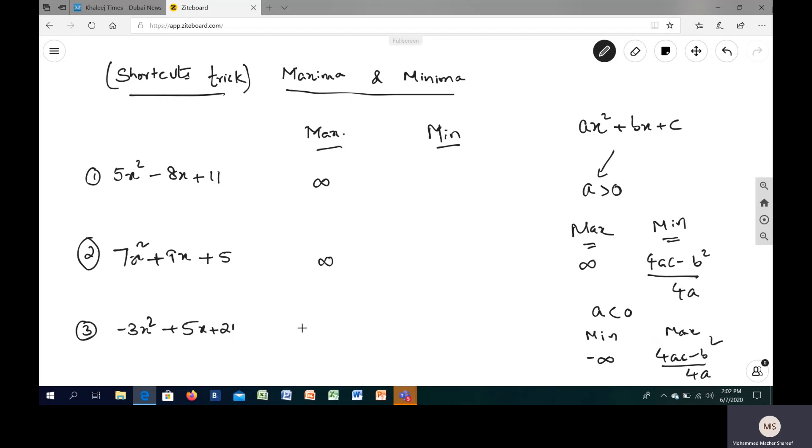Maximum is positive infinity, whereas for this one, the minimum definitely is going to give you negative infinity. Now we just need to work out for the positive cases, the minimum that is 4ac minus b squared. If you just write it over here, that is a and this is your b and this is your c. If you substitute in this particular formula, 4ac minus b squared by 4a will fetch you the answer.